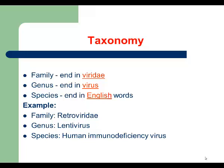So in 1966 at the International Congress of Microbiology in Moscow, a new system was proposed. According to this new system, each name has three levels. The first level is the family name — family names all end in 'Viridae'. The second level is genus names — genus names end in 'virus'. And finally, the last layer is the species name — species names are English words.